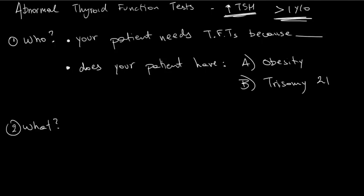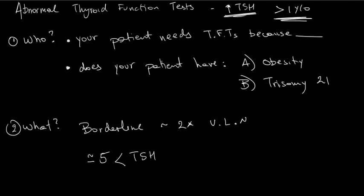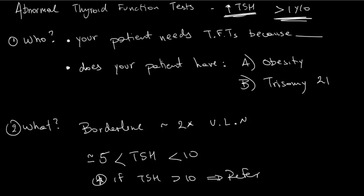Now let's define what is borderline TSH. Borderline TSH is usually two times the upper limit of what the assay says is normal. Most assays will have an upper limit of normal of five, so TSH between five and ten is borderline. If the TSH is more than ten in your patient, you should refer them to the endocrinology clinic.